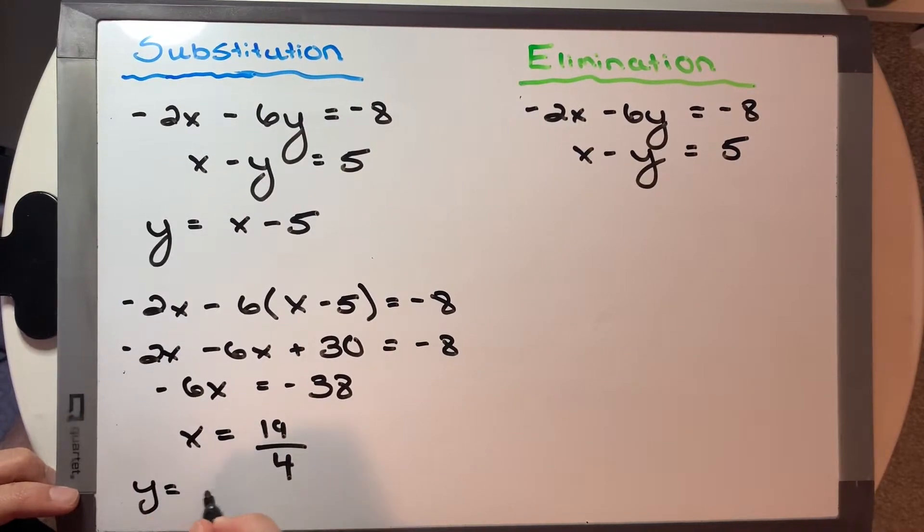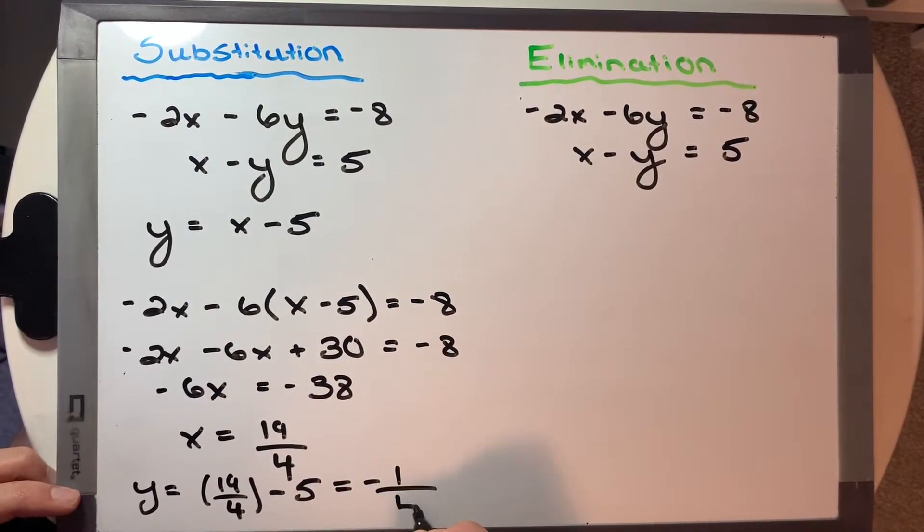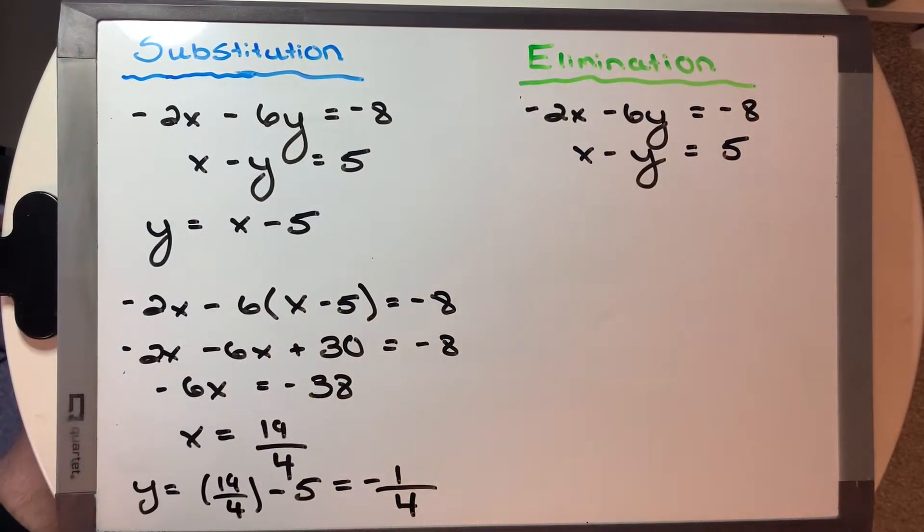we get y is equal to 19 over 4 minus 5, and that's going to equal negative 1 quarter. Okay, so we have one solution where the x value is 19 over 4 and the y value is negative 1 quarter.